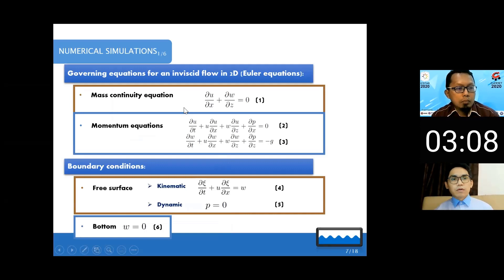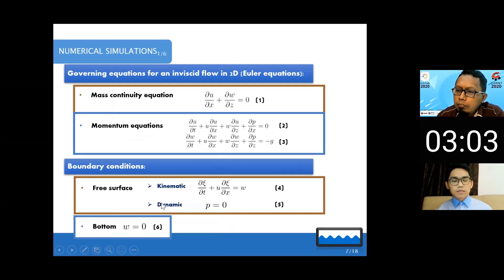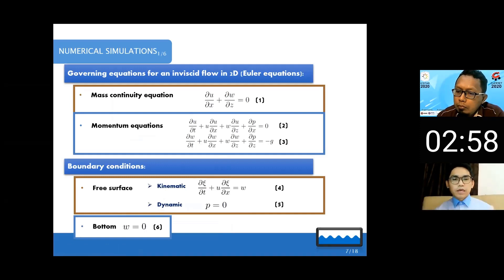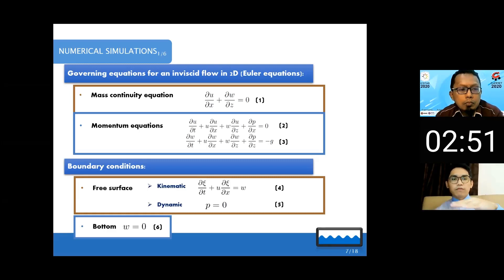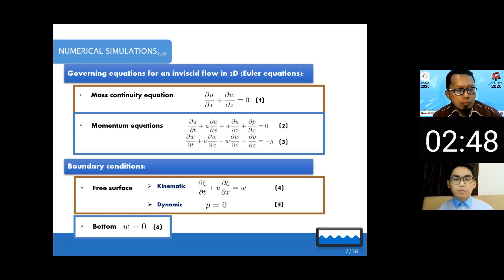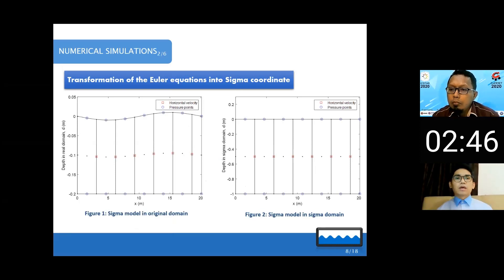These are the equations we are using. Our code is based on the Euler equations — we have the momentum equation and the continuity equation. These are the boundary conditions describing what happens at the inlet, at the outlet, at the flat bottom of the sea, and also at the free surface of the wave. That is what we mean by boundary conditions.